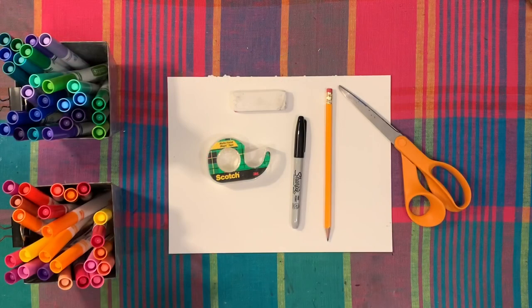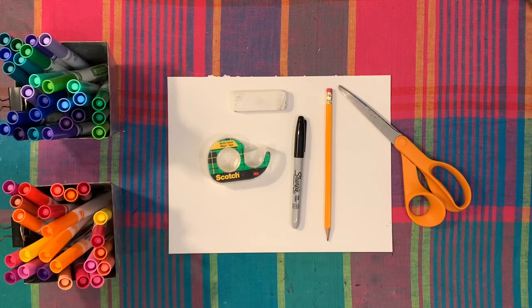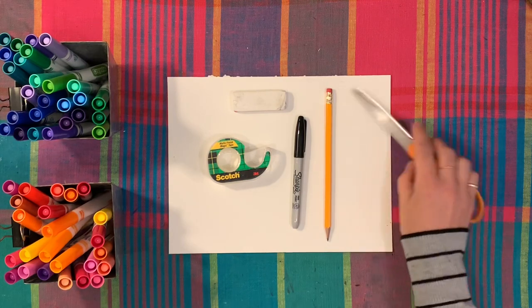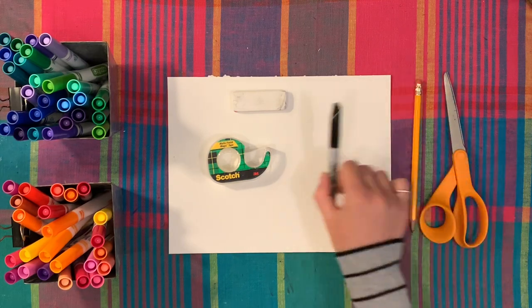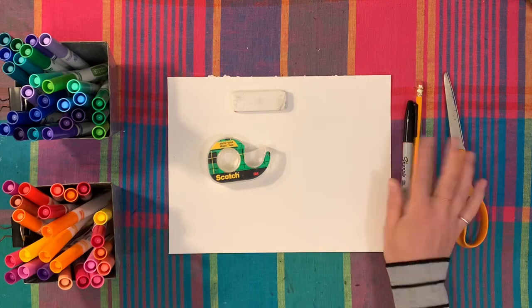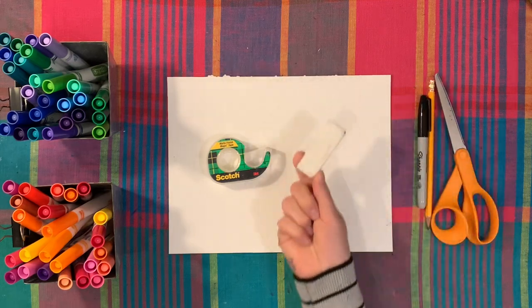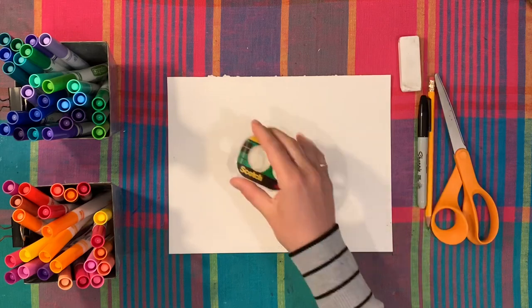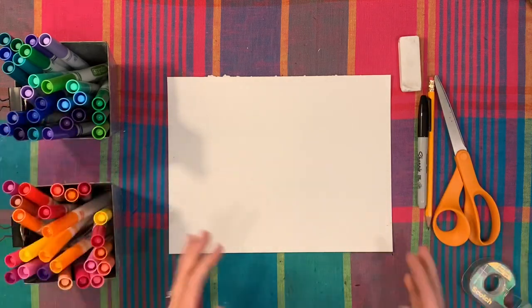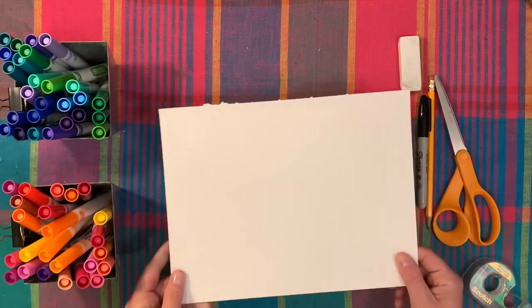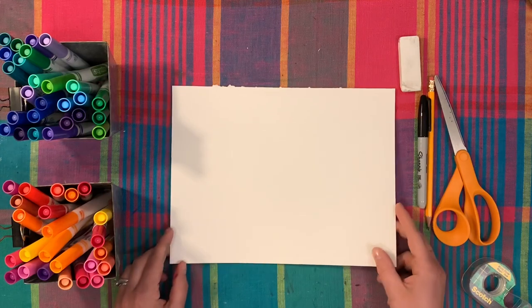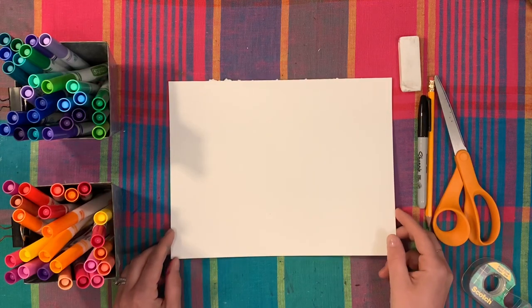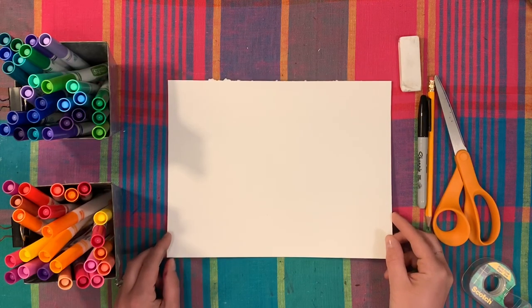This is our interactive bubble artwork. So here are the supplies you need. You need to have scissors, a pencil, a black sharpie marker or any type of black marker. You might want an eraser, and some tape, your markers, and a thicker piece of white paper. You want to make sure it's thicker. A piece of computer paper is not going to hold up, so make sure you find something thicker.